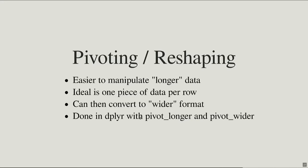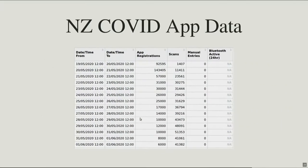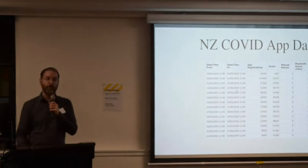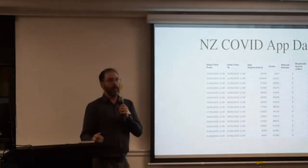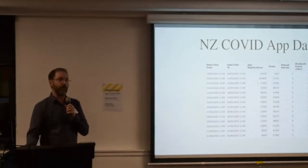To explain this, I'll use a COVID example. I grabbed some data from the Ministry of Health website — a CSV of activity from the COVID app. I loaded it straight into a data frame, which is quite straightforward. For every day we've got a start time, an end time, app registrations, QR code scans, manual entries, and how many people had Bluetooth active over the last 24 hours. Let's say we want to calculate the mean of each of these columns per month.